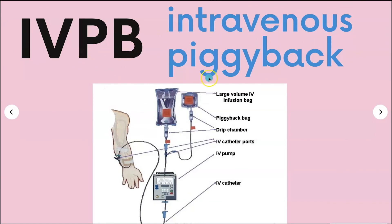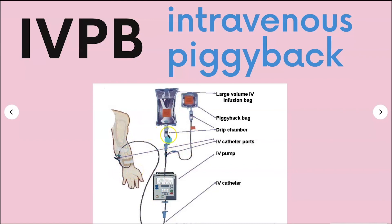IVPB is intravenous piggyback. All piggyback means is you have your large-volume IV bag — let's say normal saline — as your main line running continuously. When you piggyback, for example antibiotics, the main line pauses temporarily while the piggyback runs through the line. When the piggyback is done, the normal saline continues. There are ways to run both simultaneously, but with piggyback we give the secondary infusion and then resume the original fluids.